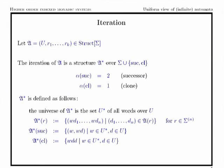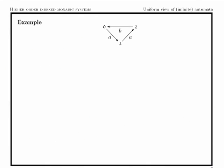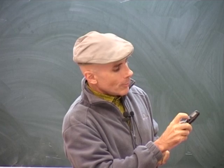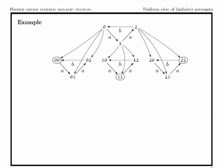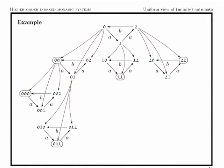If we start with a structure over some vocabulary with binary relations, then the iteration is extended with two predicate symbols: a binary one called successor and a unary one usually called clone. Let us look at how it works on a simple example with a finite structure of three states. When we iterate the structure, every vertex gets its own copy of the structure, linked through the successor relation from the original vertex, and the clone predicate indicates the origin of each copy. This is done for every vertex.